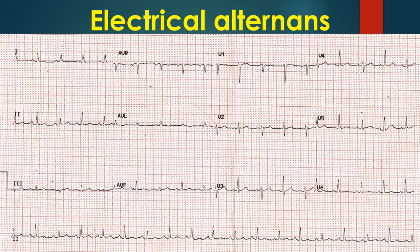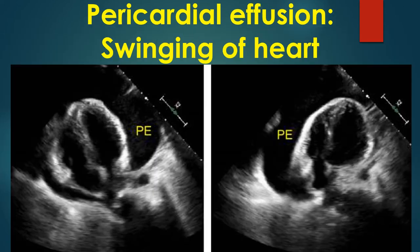ECG showing electrical alternans in massive pericardial effusion with tamponade. Echocardiogram showing swinging of the heart to either side within the pericardial fluid. This causes the electrical alternans.